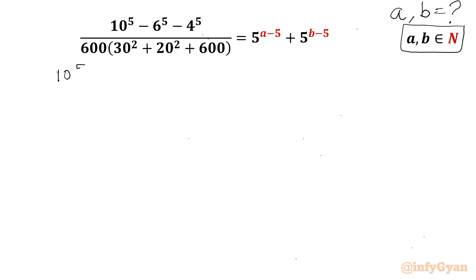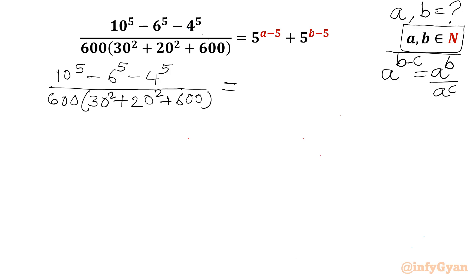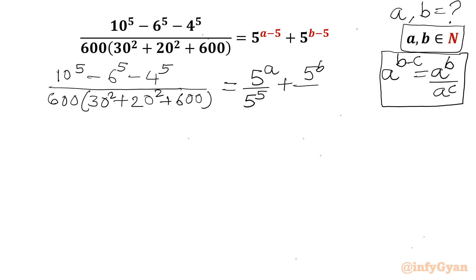I can write: 10^5 minus 6^5 minus 4^5, divided by 600 times (30² + 20² + 600). Now I will write one exponent property: a^(b-c) can be written as a^b divided by a^c, which we will use on our RHS. So I can write the RHS as 5^a divided by 5^5, plus 5^b divided by 5^5.